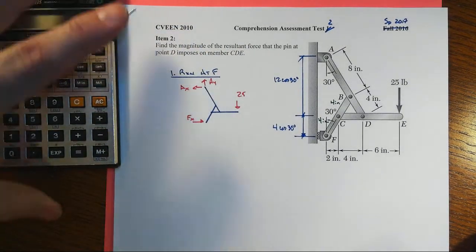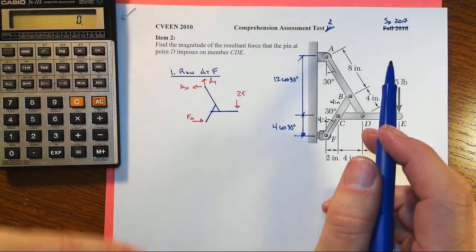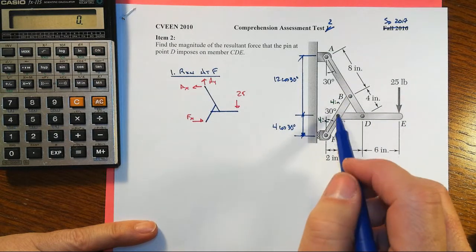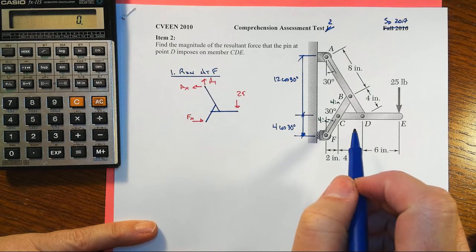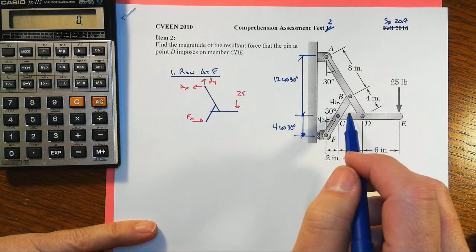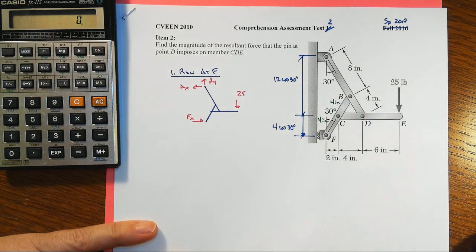In this second item on the second test of Spring 2017, we've got an assemblage of three long members. They have more than one connecting point—they have two or three connecting points. This one has two and it has a transverse load applied. We got a pretty complex kind of system here.